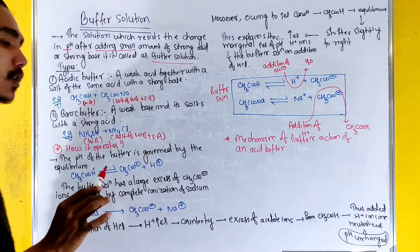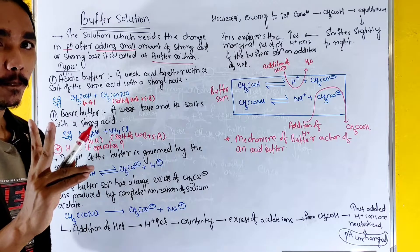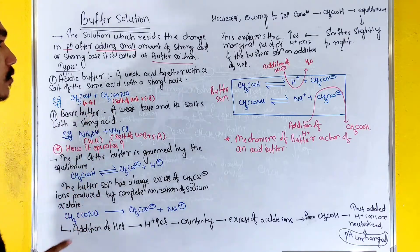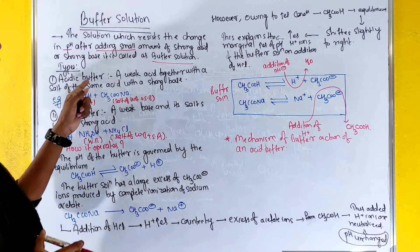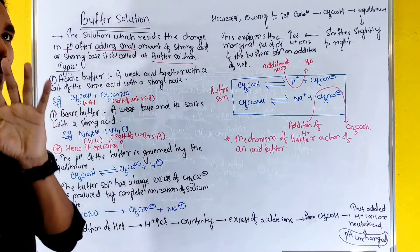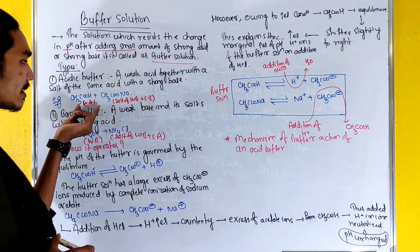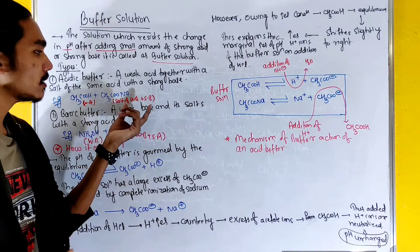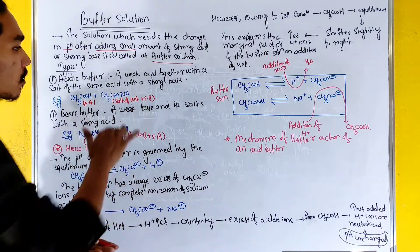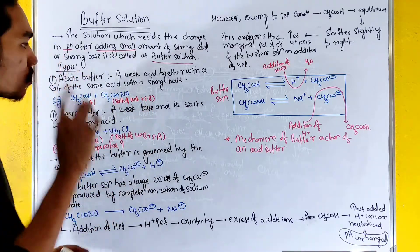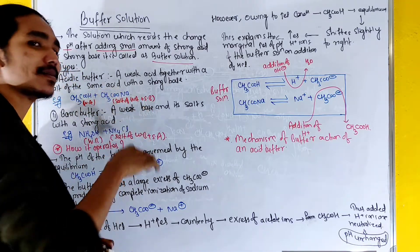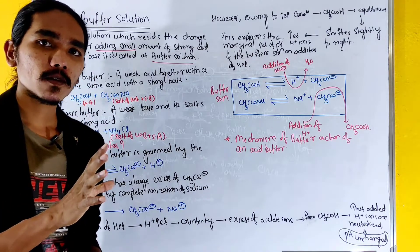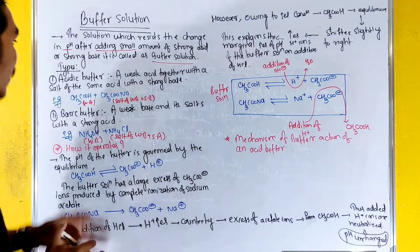There are two different types of buffer solutions. The first type is an acidic buffer. This consists of a weak acid plus a salt of that weak acid with a strong base.